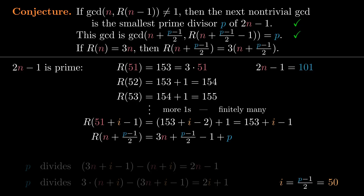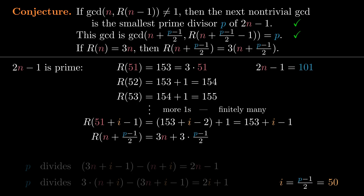What about the third part? If R(n) is 3 times n, as it is for n equals 51, does the same relation hold P minus 1 over 2 steps later? We can do a little algebra and see that yes, we are back in a situation where the value of the sequence is 3 times its index.